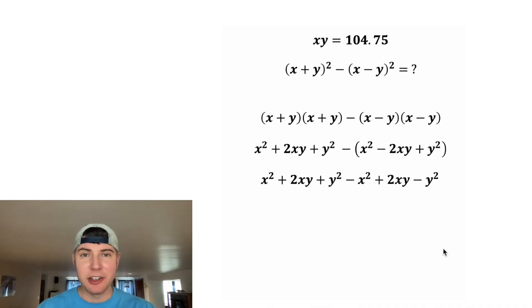And now we're going to combine like terms. We have a positive x squared and a negative x squared. They cancel each other out. We have a positive y squared and a negative y squared. They also cancel each other out. And then we can combine the 2xy plus the 2xy to get 4xy.